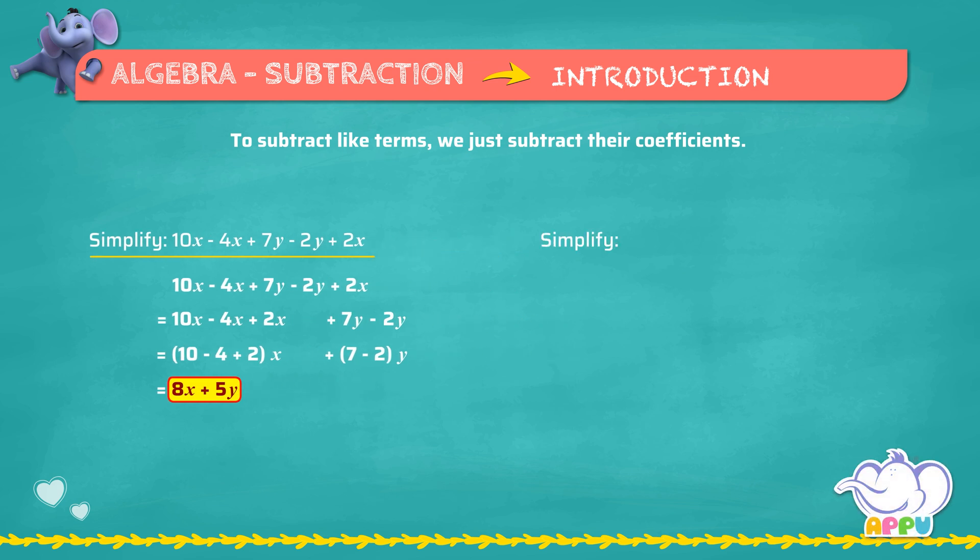Simplify 5x plus 3y plus 6 minus 2x minus y minus 4. Y is the same as 1y.